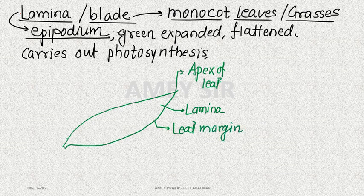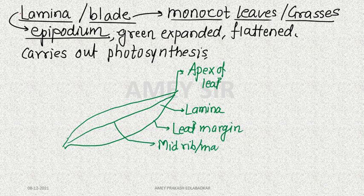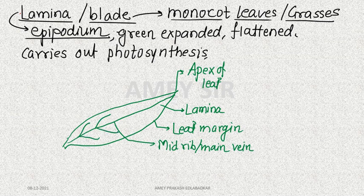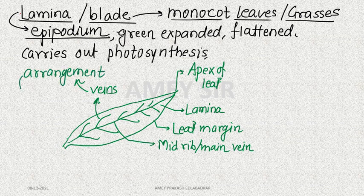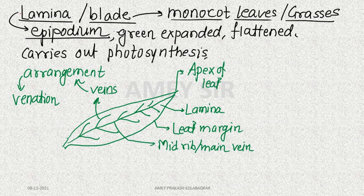The lamina has a leaf margin and a main vein — also called the costa or midrib — from which lateral veins extend. The arrangement of these veins is called venation. In dicots, venation is reticulate, and in monocots it is parallel. The venation pattern is visible from the dorsal surface of the leaf.